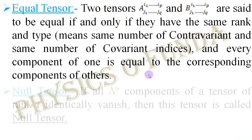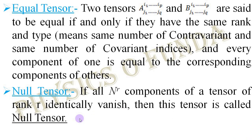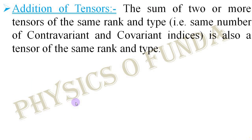Now we see what is a null tensor. If we consider a tensor of rank R and if all the components of that tensor identically vanish, then the corresponding tensor is called a null tensor. That means a tensor whose components identically vanish is called a null tensor.